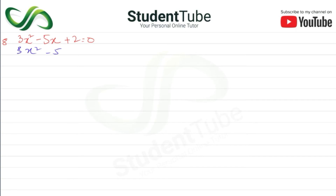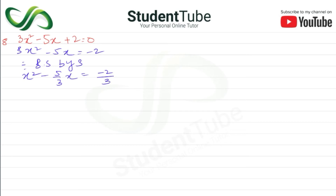So first we have 3x squared minus 5x plus 2 equals 0, and we move the 2 to the other side. Now divide both sides by 3. The 3 cancels, giving us x squared minus 5 upon 3 times x is equal to minus 2 upon 3.